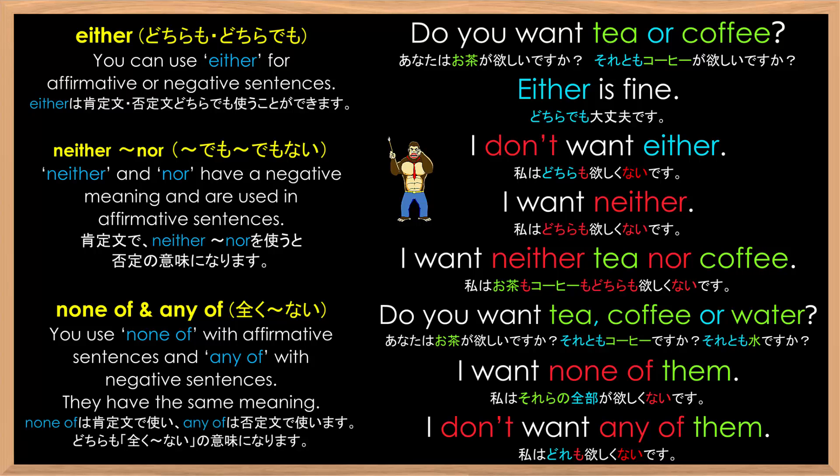Let's practice the sentences one more time. 'Do you want tea or coffee?' 'Either is fine.' 'I don't want either.' 'I want neither.' 'I want neither tea nor coffee.' 'Do you want tea, coffee, or water?' 'I want none of them.' 'I don't want any of them.'